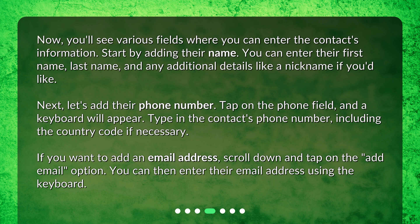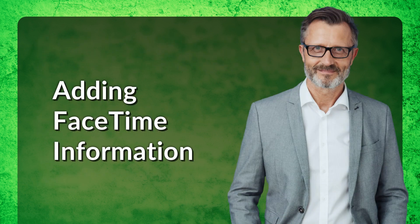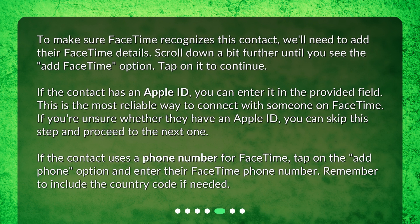If you want to add an email address, scroll down and tap on the Add Email option. You can then enter their email address using the keyboard. To make sure FaceTime recognizes this contact, we'll need to add their FaceTime details. If the contact has an Apple ID, you can enter it in the provided field — this is the most reliable way to connect with someone on FaceTime. If you're unsure whether they have an Apple ID, you can skip this step. If the contact uses a phone number for FaceTime, tap on the Add Phone option and enter their FaceTime phone number, including the country code if needed.